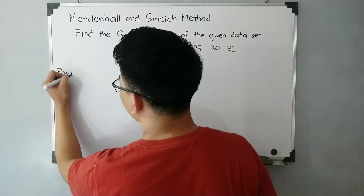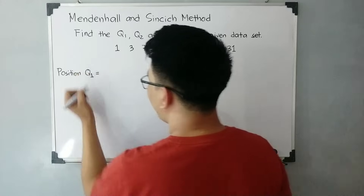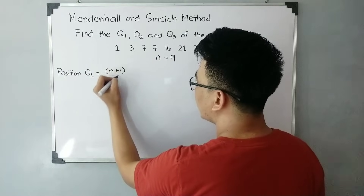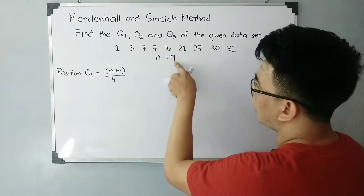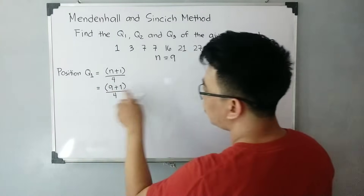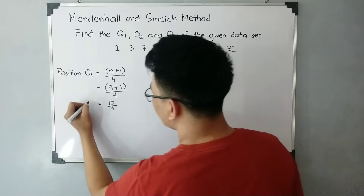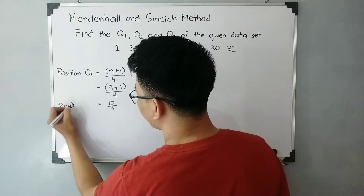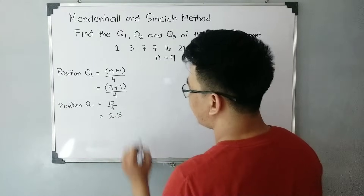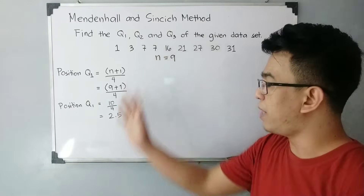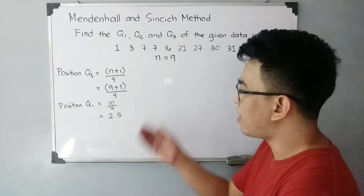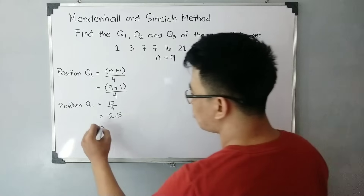Let's solve for quartile 1. First, we find the position of quartile 1 — this is not yet the value, just the position. Using the formula (n + 1) / 4, with n = 9: we get (9 + 1) / 4 = 10 / 4 = 2.5. The rule in the Mendenhall and Sinich method is that when the result falls between two integers, we round up. So 2.5 rounds up to 3, meaning the position is the 3rd.